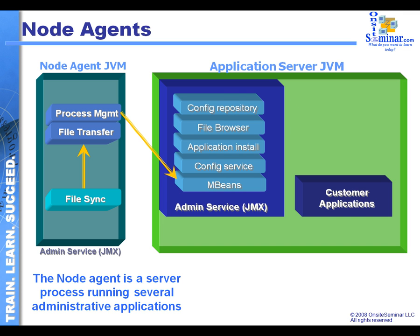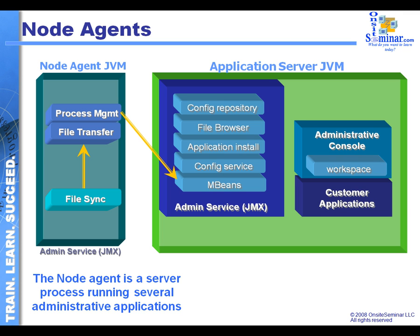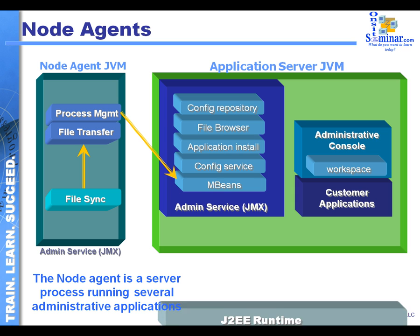In addition to that, we have all of our customer base and enterprise applications running on this particular physical box. We have the administrative console process with its workspace component. Now, in a network deployment environment, the administrative console process on this particular JVM would be disabled — it would be doing all the management strictly from the deployment manager side.